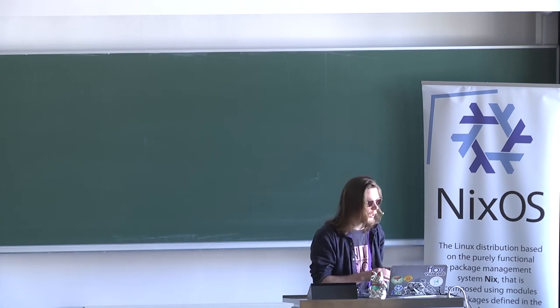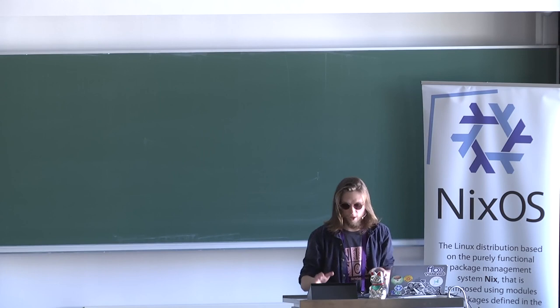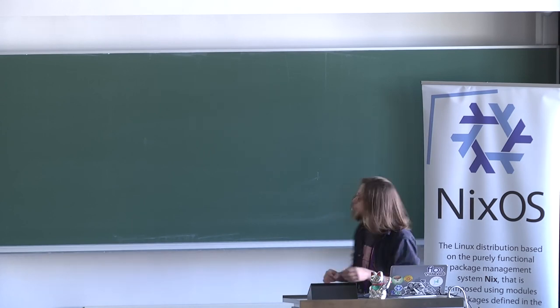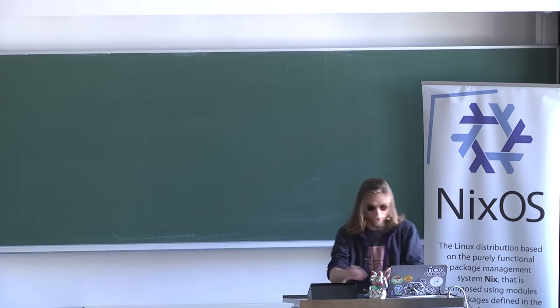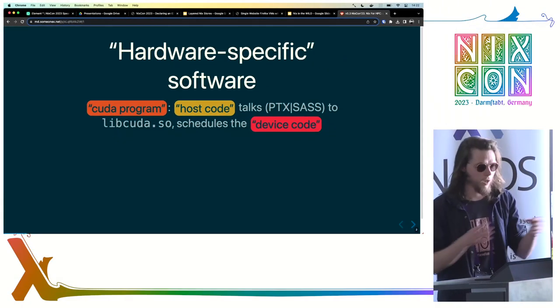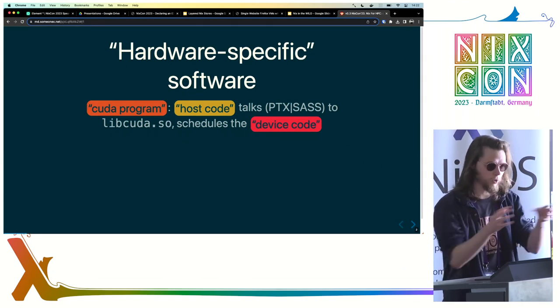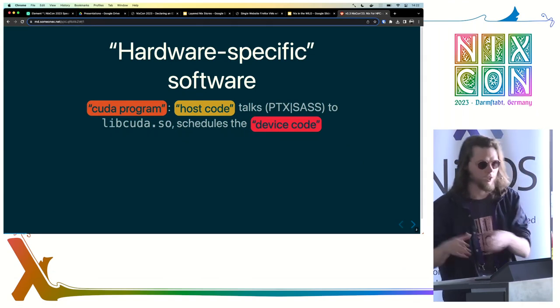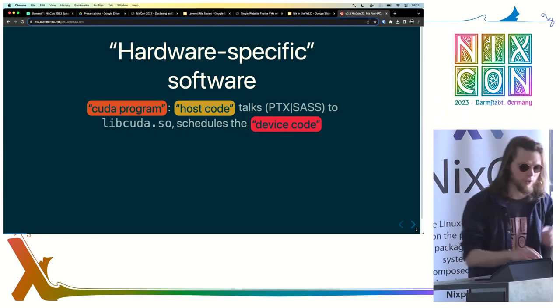I bring up OpenGL and CUDA because they are kind of special. When you run a CUDA program, you effectively run a normal host code, say x86-64, which communicates with a so-called user space driver — libcuda.so. It uploads a device program written in some intermediate language to be scheduled for execution on an external device.